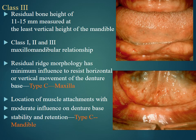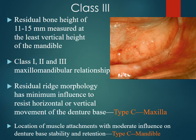The residual bone height of 11 to 15 mm is measured at the least vertical dimension, with Class 1, 2, or 3 maxillomandibular relation. The residual ridge morphology has minimum influence to resist horizontal or vertical movement of the denture base — Type C maxilla — and location of muscle attachments with moderate influence on denture base stability and retention.